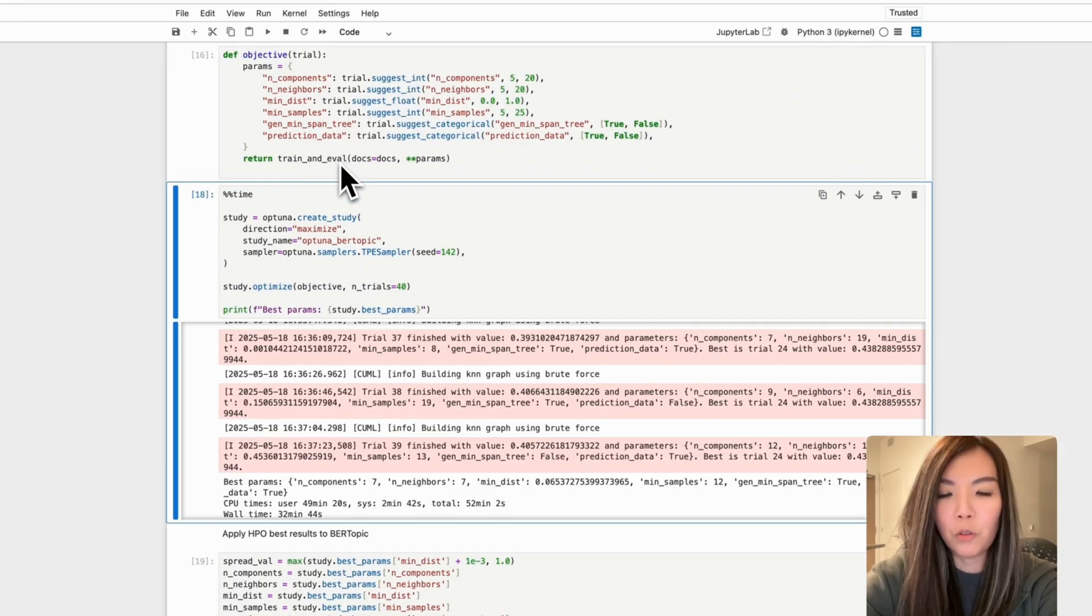Next, within the objective function, we call train_and_eval, our core evaluation function, passing in these hyperparameters. This function returns a weighted score based on coherence, diversity, and noise penalty. Optuna will use this score to determine how good each set of parameters is.